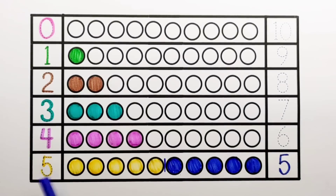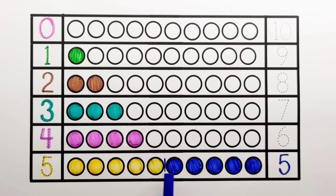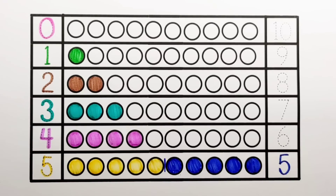5 and 5 makes 10. 1, 2, 3, 4, 5, 6, 7, 8, 9, 10. 5 plus 5 equals 10.